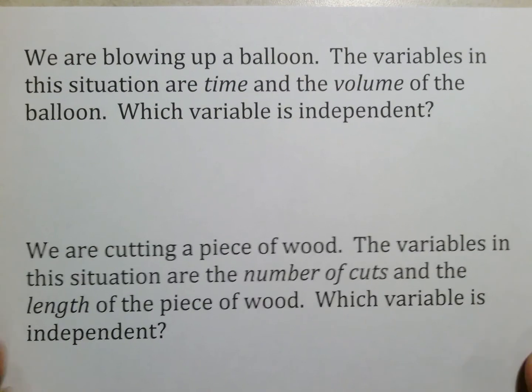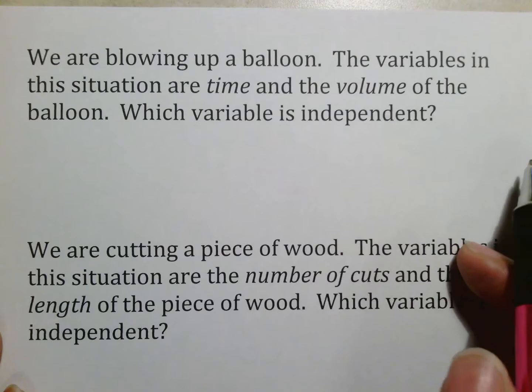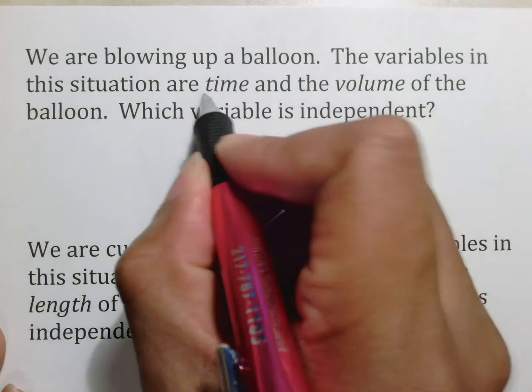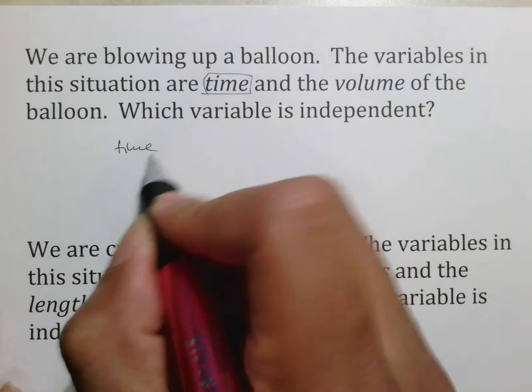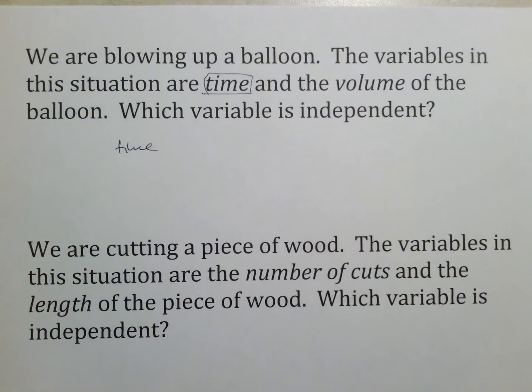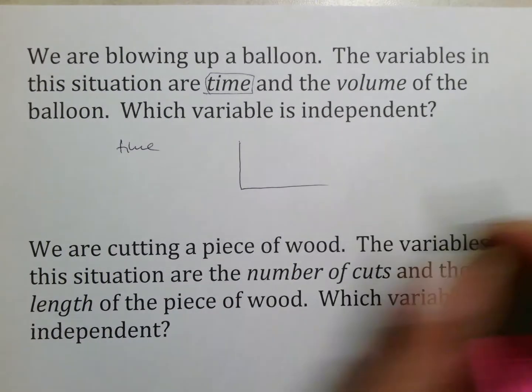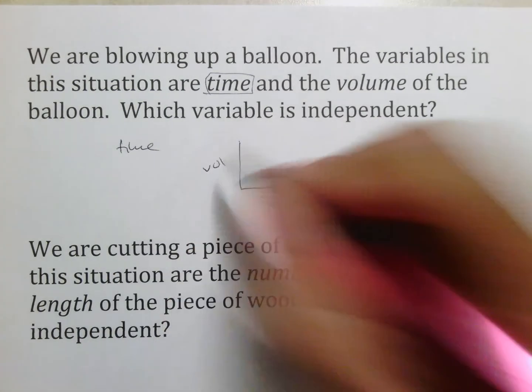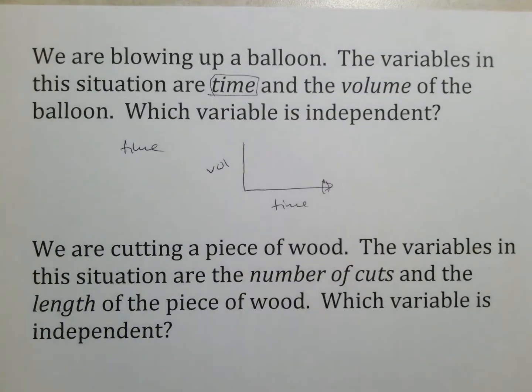We are blowing up a balloon. The variables in the situation are time and the volume of the balloon, which variable is independent. The easiest one is time because time is typically going to take over everything else. In some situations, volume could be. But if you think about the volume of the balloon, it will not continue moving forward at some point. Air might be going out of the balloon, which means that the volume of the balloon, which is how much is inside of it, might be going down. Or at some point when the balloon pops, the volume goes down to zero and all of a sudden it's over. So in that situation, time would be it. So if you were graphing this, you would put your time here. You would put your volume there. Your independent variable goes horizontally.